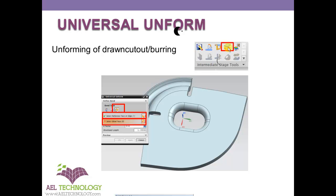Once you click the Universal Unform icon, set the bend type as burring and select the reference face. Then select the bend which you need to unfold. Once you have done this, it will be automatically unfolded to a flat sheet metal shape. This will be very clear when demonstrated in the video.